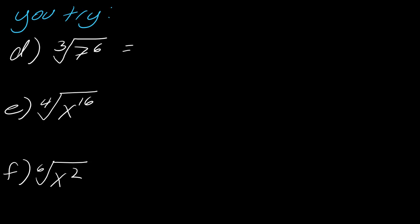So for this first one, I would rewrite this as 7 to the 6 over 3. So that's just 7 squared. Now for this one, this is x to the 16th over 4. So 16 over 4, that's just going to give me x to the 4th.